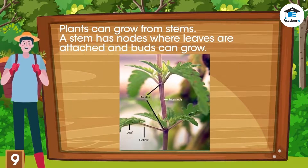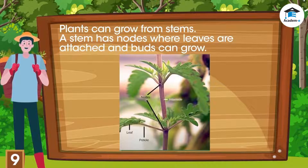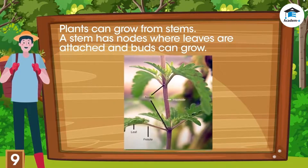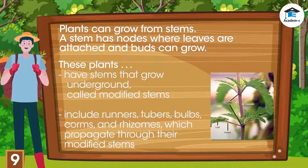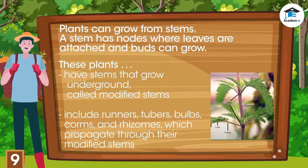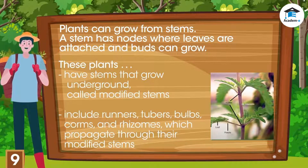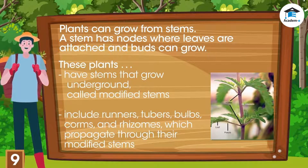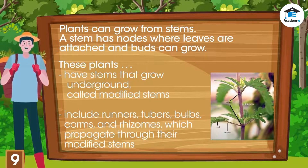Plants can also grow from stems. A stem has nodes where leaves are attached and buds can grow. Stems generally grow above the ground; however, some plants have stems that grow underground, called modified stems. Plants with special stems include runners, tubers, bulbs, corms, and rhizomes, and these plants propagate through their modified stems.